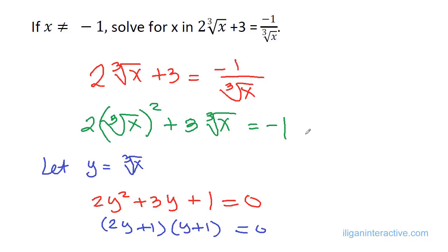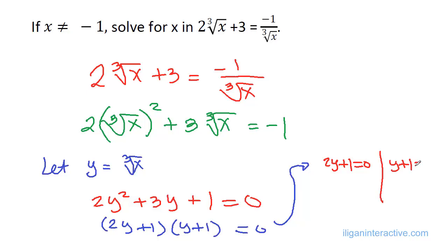Equate each factor to 0. So, 2y + 1 = 0 gives y = negative 1/2, and y + 1 = 0 gives y = negative 1.